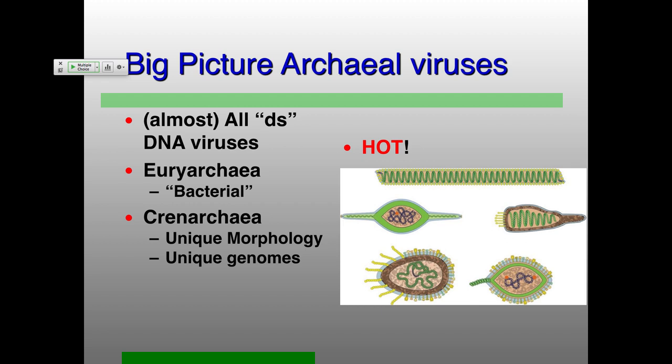The very first archaea to be found were the methanogens — this was Carl Woese and Ralph Wolfe, who were working in Indiana, and they found the 16S sequences to be really different. Those were the methanogens, and so a lot of the first viruses that people found were what people were looking for in terms of virions. So the quote-unquote 'bacterial' morphology may be a little bit of an artifact there.